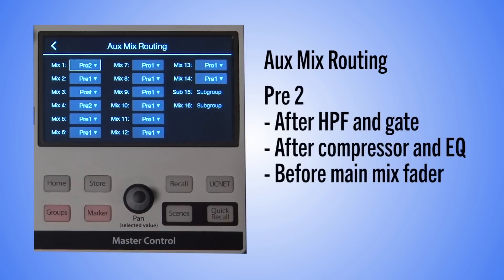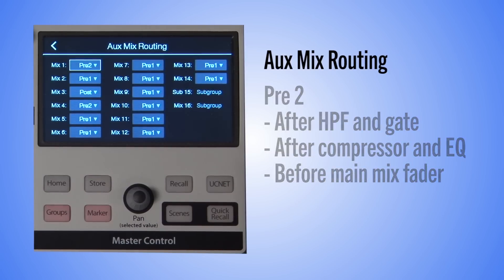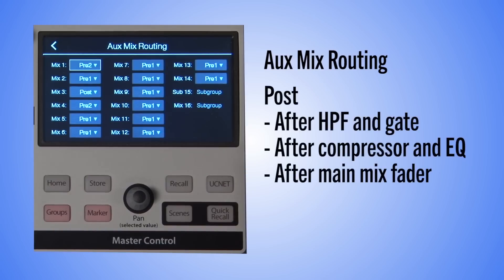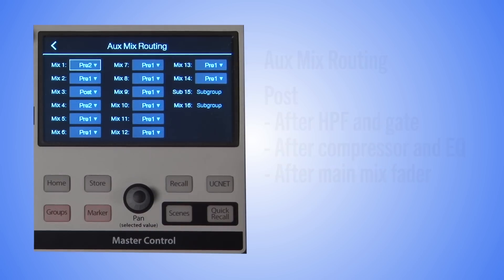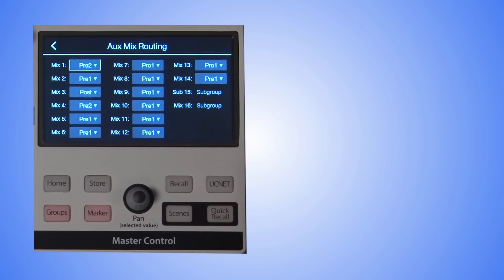Pre-2 sends the channels after all the fat channel processing, but before the main mix fader. Post sends the channels after all processing and after the main mix fader. If a mix is set to subgroup mode, it will show the text 'subgroup' instead of a dropdown for pre/post options.